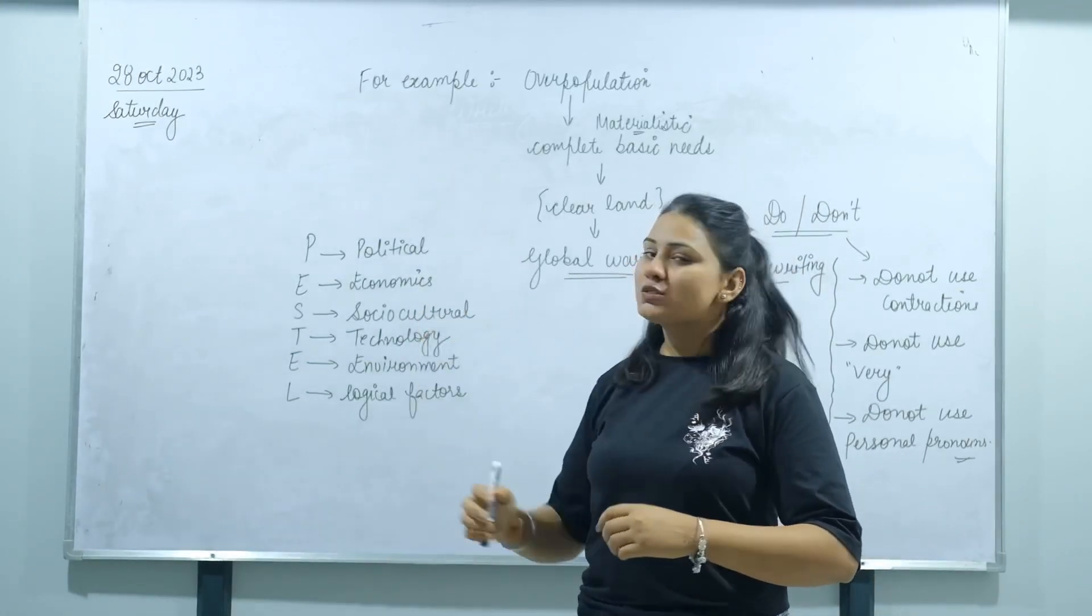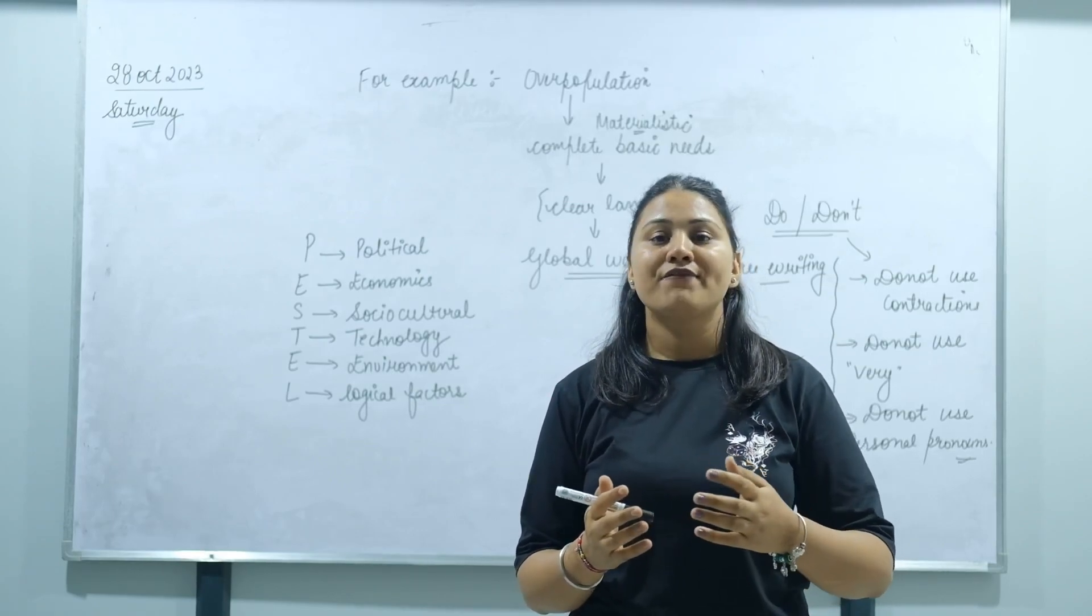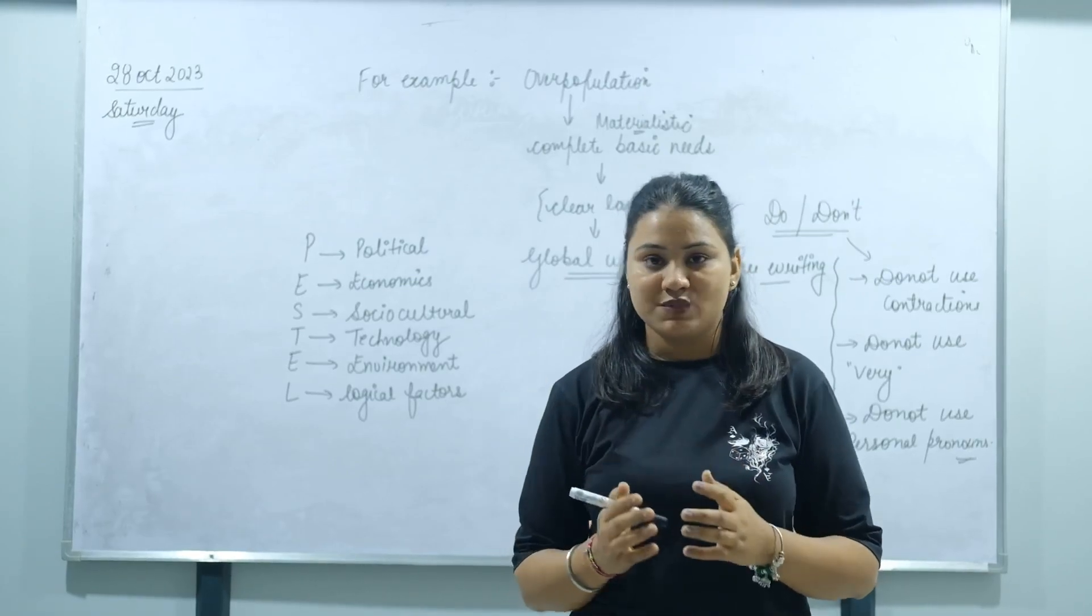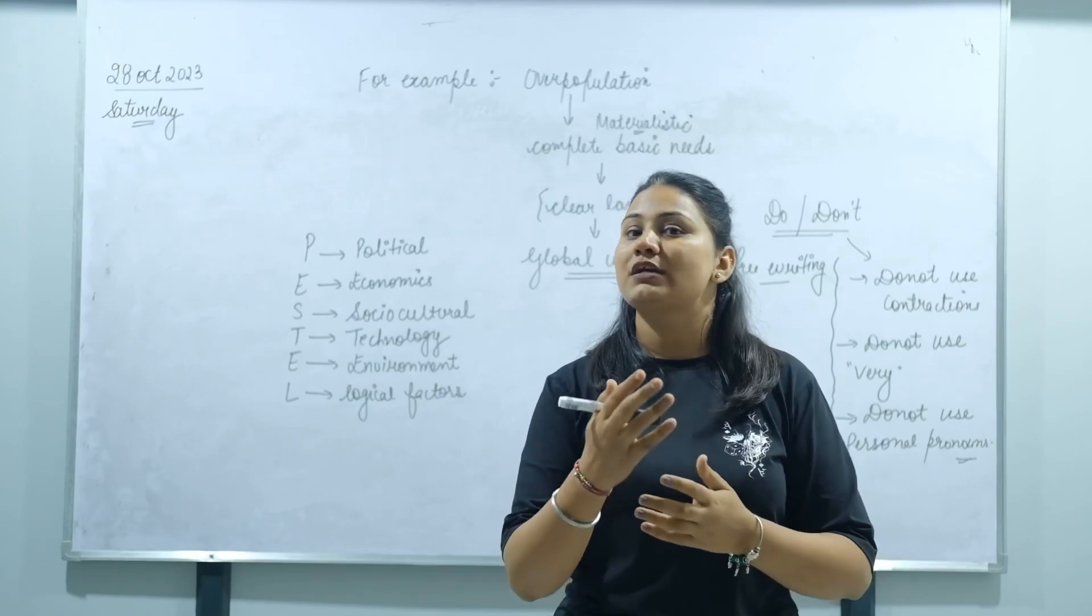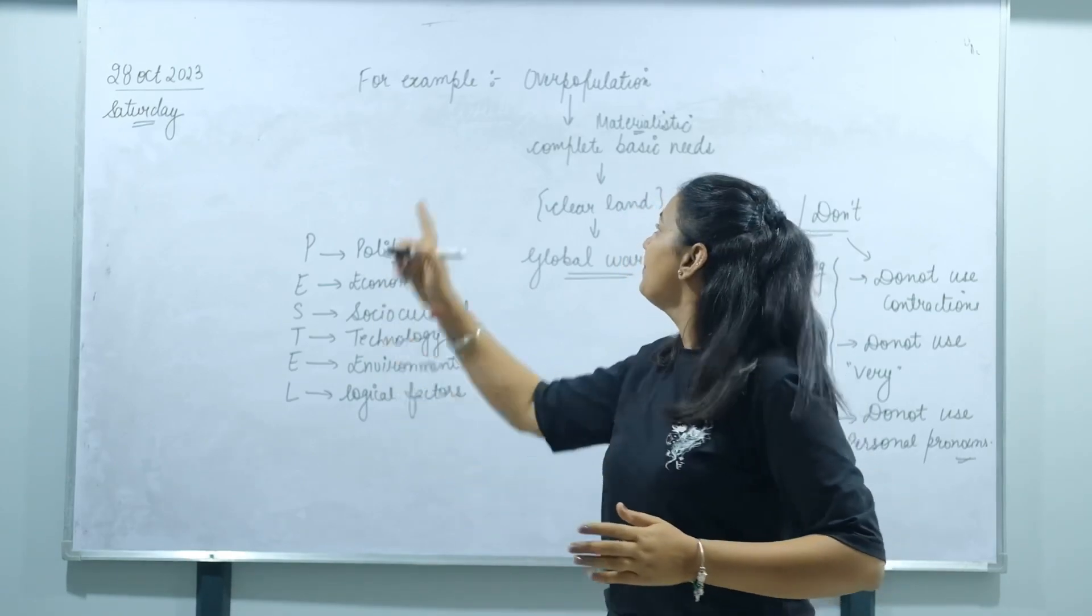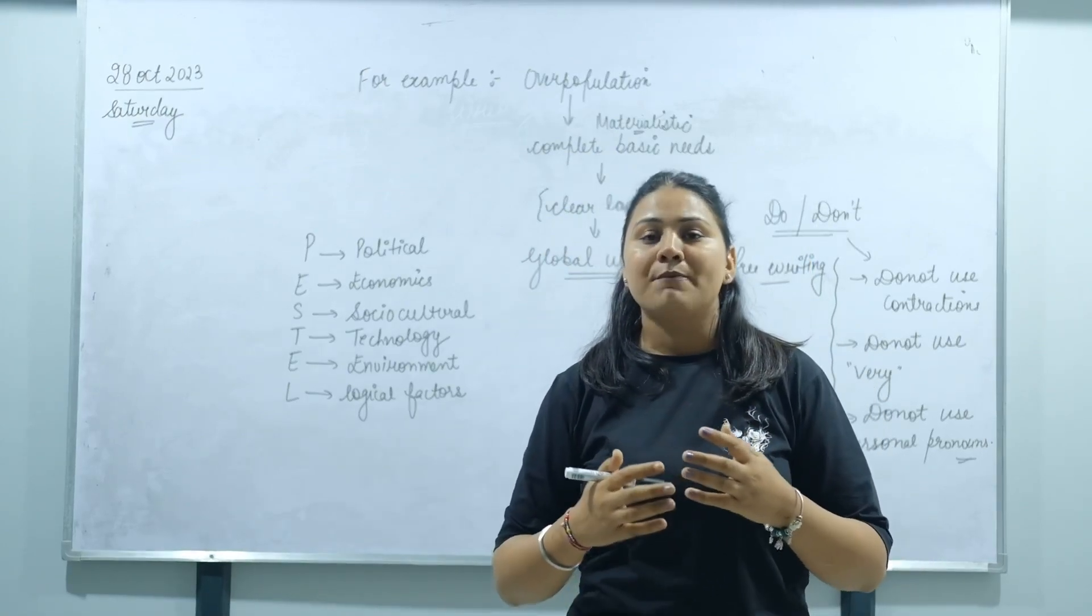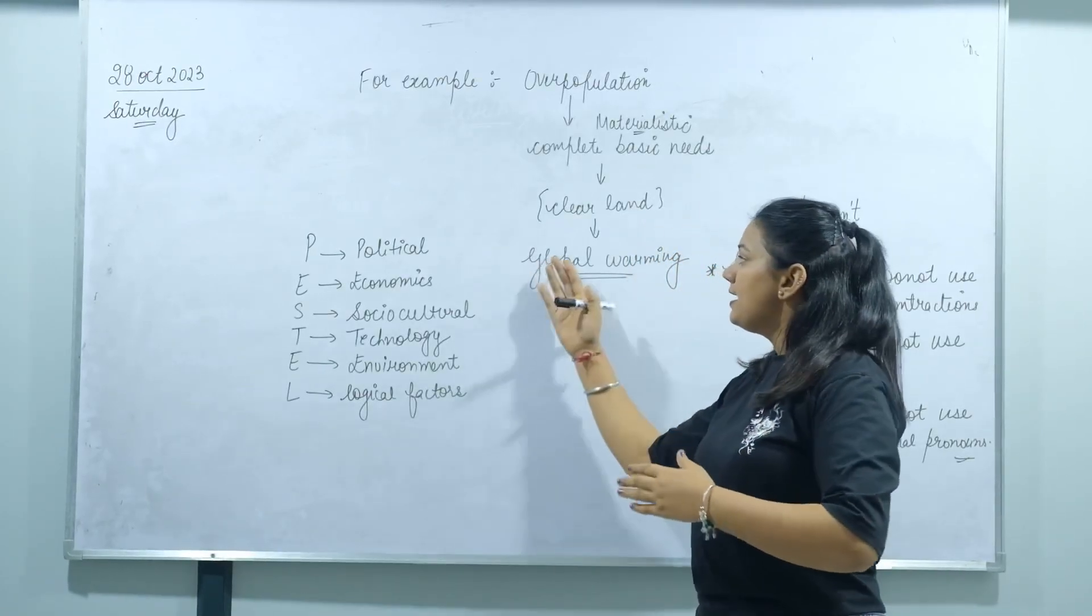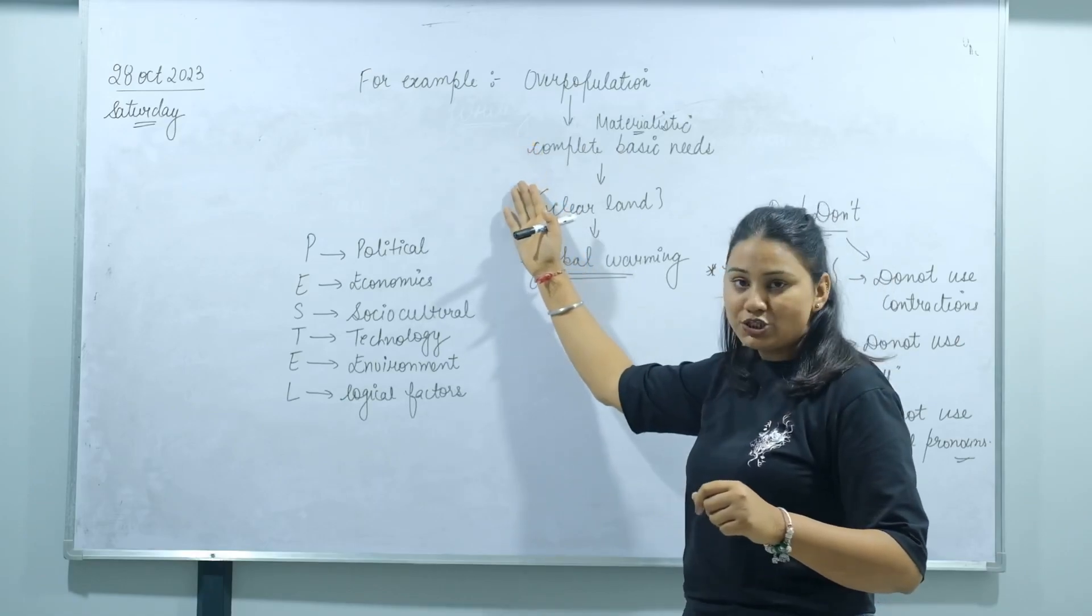Let me explain the PEEP method with an example. For instance, when you have an essay stating that today's environment is very bad and not suitable for living because the temperature has risen a lot. After identifying the issue, the main point should be overpopulation. Due to overpopulation, people's materialistic needs must be fulfilled. For example, they need houses, food, and land must be cleared. To clear land, deforestation occurs and global warming is increased.